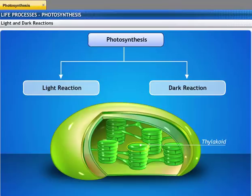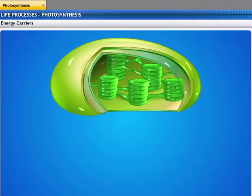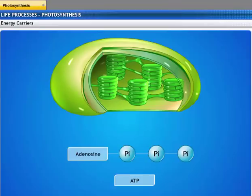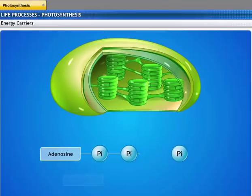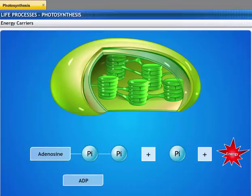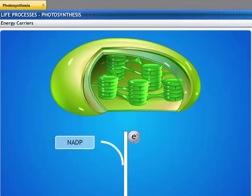Light reaction takes place in the thylakoids of the chloroplast. Dark reaction takes place in the stroma of the chloroplast. The energy carriers involved in photosynthesis are ATP (adenosine triphosphate), which acts as an energy carrier. The third phosphate group in ATP breaks up, releasing ADP, phosphate, and energy.